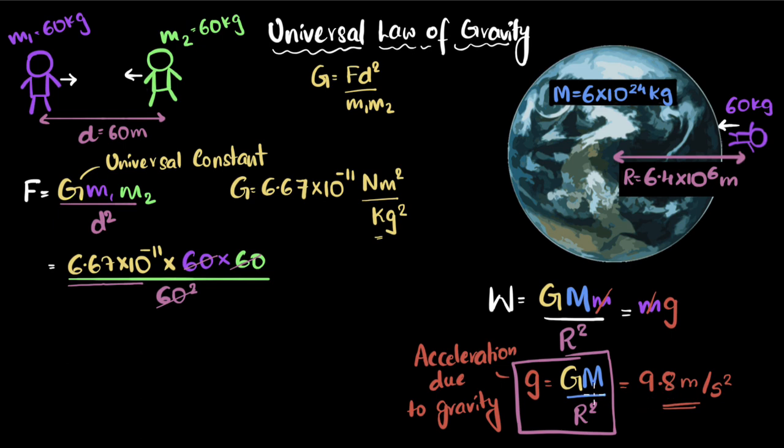That's where that 9.8 meters per second squared comes from. This value depends on the mass of the planet and the radius of the planet. So if you go to a different planet, you'll have different values for g. And by the way, you don't have to remember the formula for g. Look, it just comes from weight, which basically is coming from the universal law of gravity.